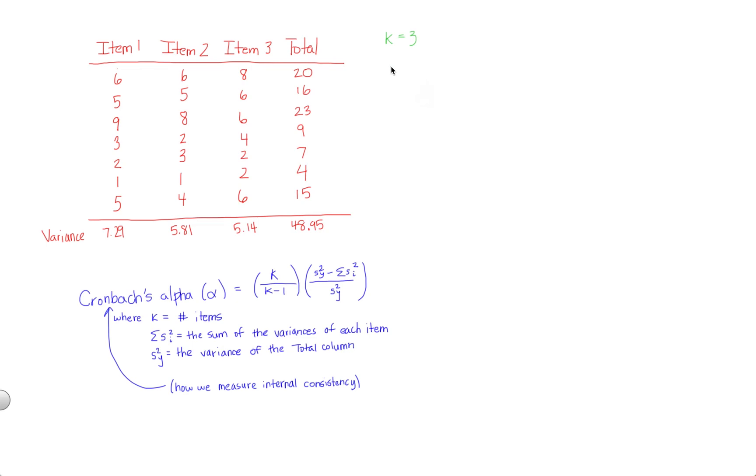So we already know that s squared sub y comes out to 48.95. There's no additional work required there. Now sigma s squared sub i requires just some addition. 7.29, the variance of item 1, plus 5.81, the variance of item 2, plus 5.14, the variance of item 3. And if you do this simple addition, you'll end up with 18.24. And now we're ready to plug in.